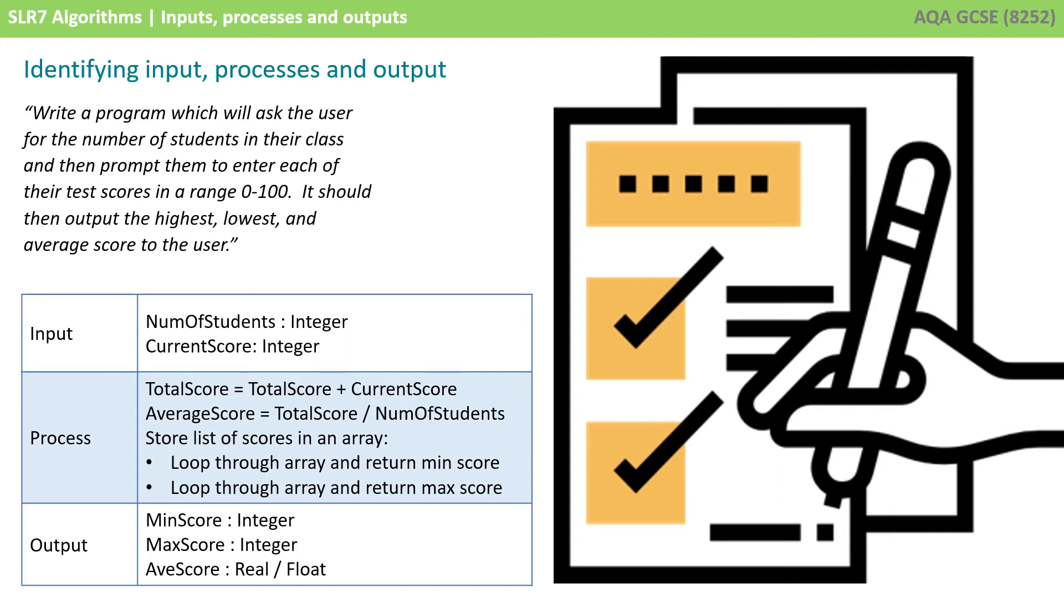There's various processes required here. We know we're going to need to work out a total score, so we're going to be performing a calculation. Total score equals the current total score plus the new current score. Once all scores are entered, we've been told we're going to need to output an average score, so one of the processes will need to be average score equals the total score divided by the number of students, which was entered earlier. We probably need to store lists of scores in an array or a list, and we're going to need to loop through them, or use some other function available in our programming language to return the min and the max scores.